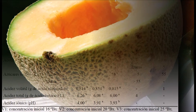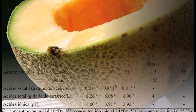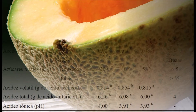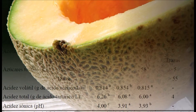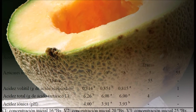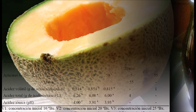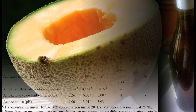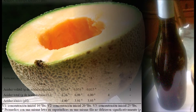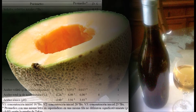Alcohol content: 7.8, 10 grados Gay-Lussac. Methyl alcohol: 0.008, 0.002, 0.004 grams per liter. Ethyl acetate: 0.02, 0.04, 0.08 milligrams per liter. Total sugars: 20, 40, 58 grams per liter. Volatile acidity: 0.814, 0.854, 0.815 grams per liter.